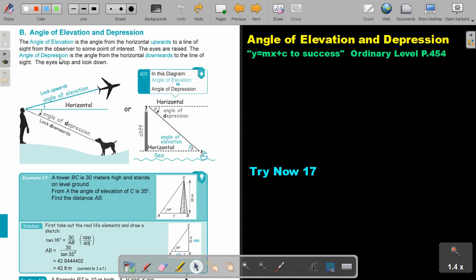The angle of depression is the angle from the horizontal downwards to the line of sight. The eyes drop and look down. This is the angle of depression.